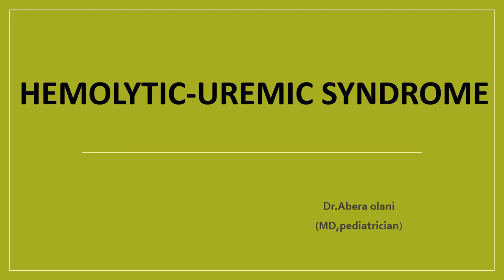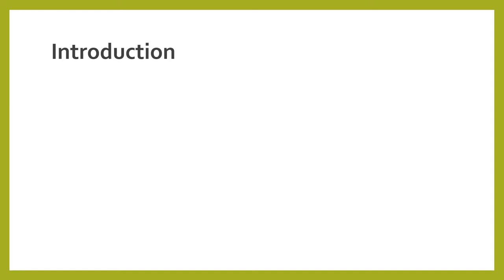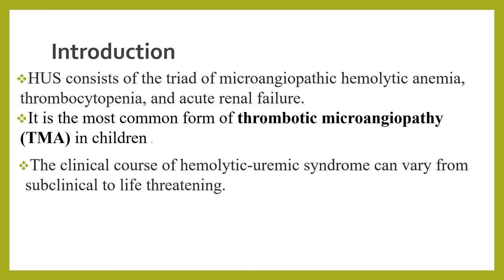Hello guys, let me talk about hemolytic uremic syndrome today. Hemolytic uremic syndrome was described by Gazer in a German publication in 1955. Hemolytic uremic syndrome consists of a triad of microangiopathic hemolytic anemia, thrombocytopenia, and acute renal failure.